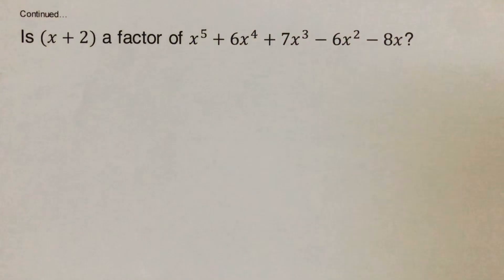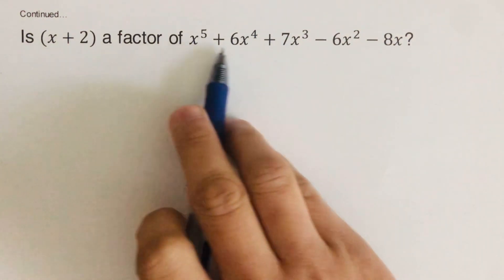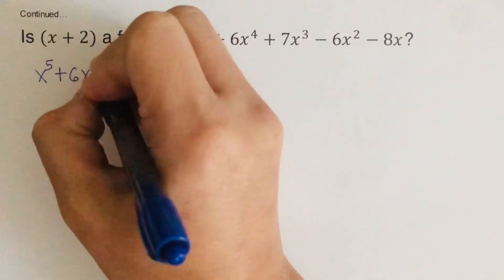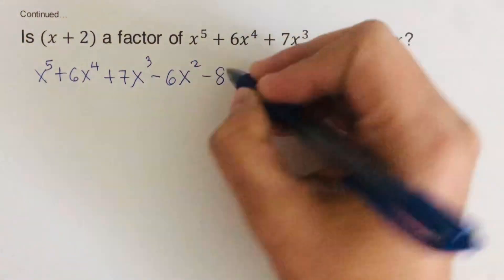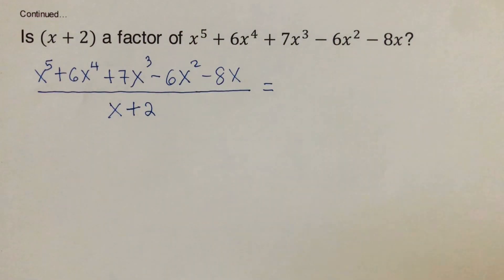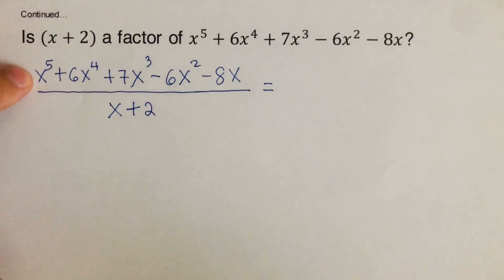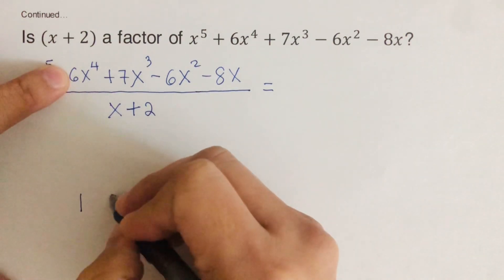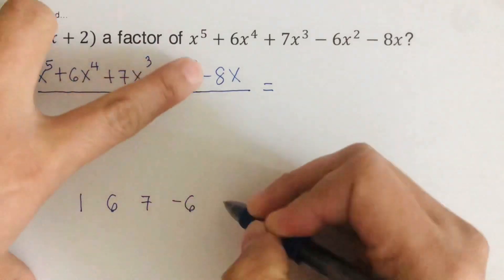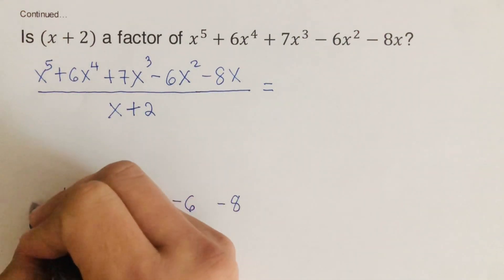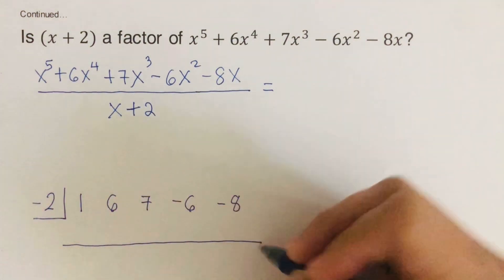Now let's go over the next problem. We have our polynomial p(x) and our x minus a. Setting up the synthetic division, we write only the coefficients: 1, 6, 7, negative 6, and negative 8. We switch the sign of the divisor to get negative 2, then bring down the 1.